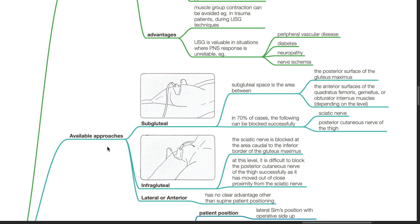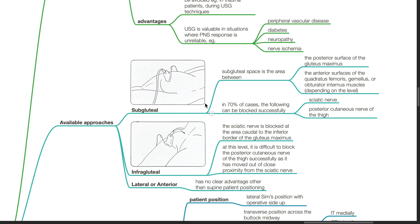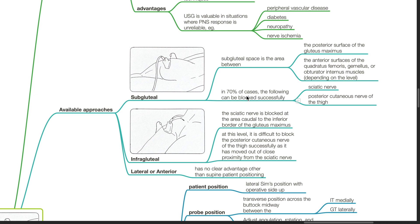Available ultrasound approaches: subgluteal, infragluteal, lateral, or anterior. The subgluteal space is the area between the posterior surface of the gluteus maximus and the anterior surfaces of the quadratus femoris, gemellus, or obturator internus muscles, depending on the level. In 70% of cases, the sciatic nerve and the posterior cutaneous nerve of the thigh can be successfully blocked. Infragluteal approach: the sciatic nerve is blocked caudal to the inferior border of the gluteus maximus; at this level it is difficult to block the posterior cutaneous nerve of the thigh. The lateral or anterior approaches have no clear advantages other than supine patient positioning.